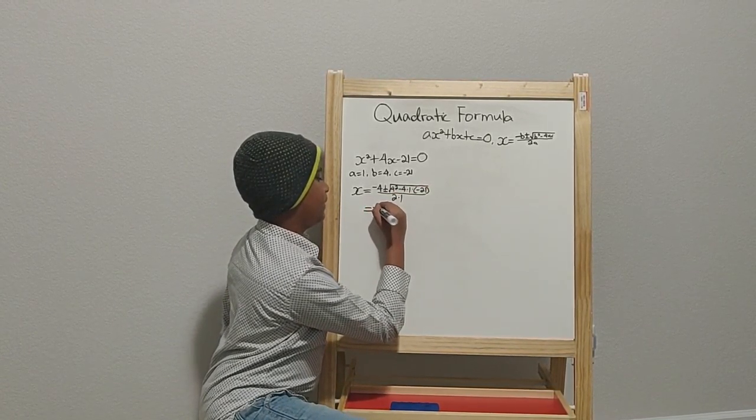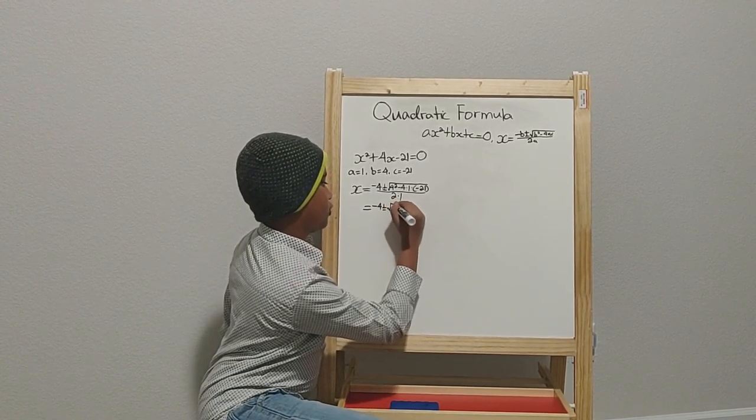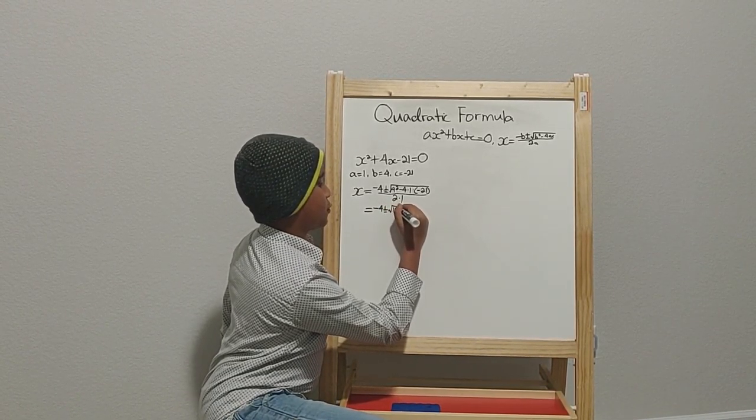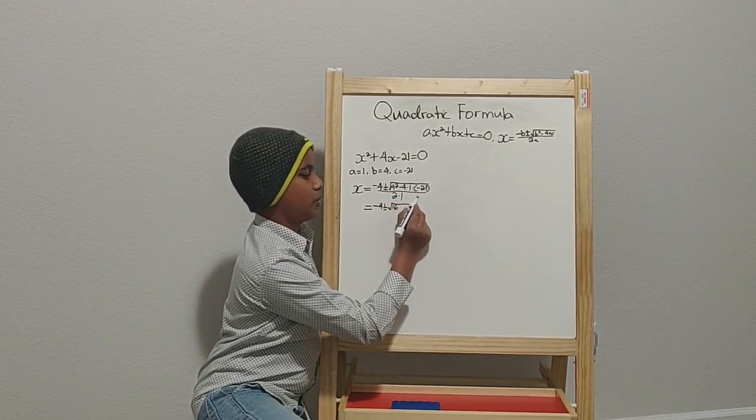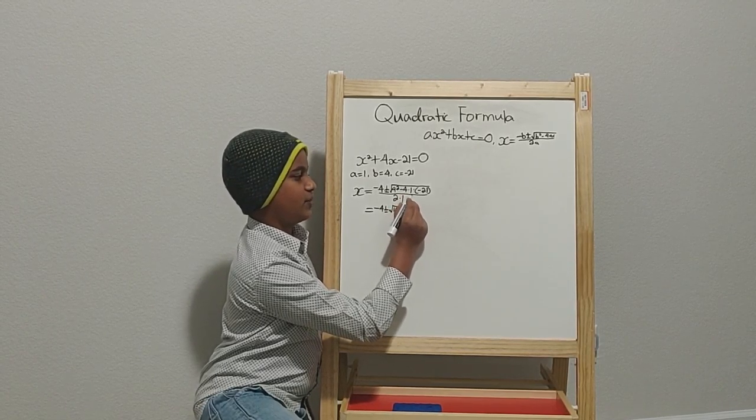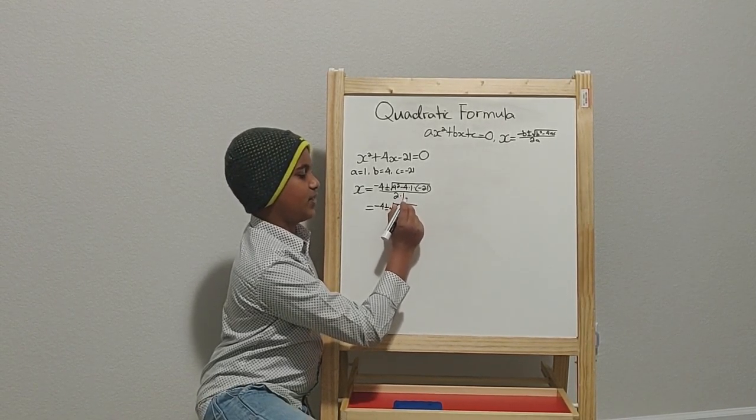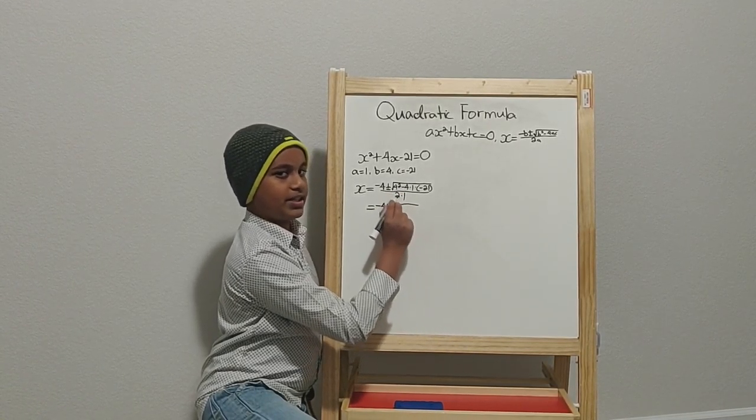Then we get negative 4 plus or minus the square root of 16, as 4 squared is 16. Then, negative 4 times 1 is negative 4. Negative 4 times negative 21 is positive 84, as a negative times a negative is a positive.